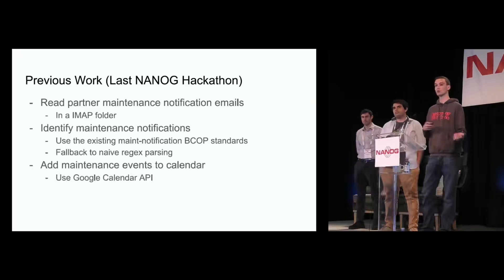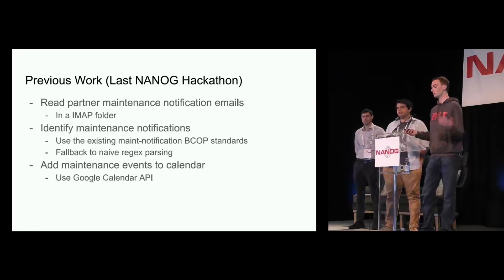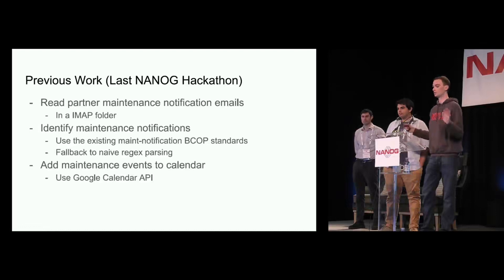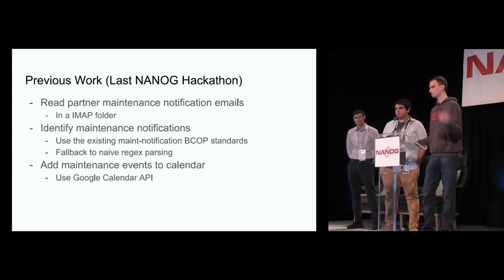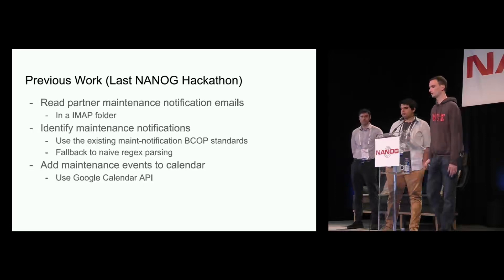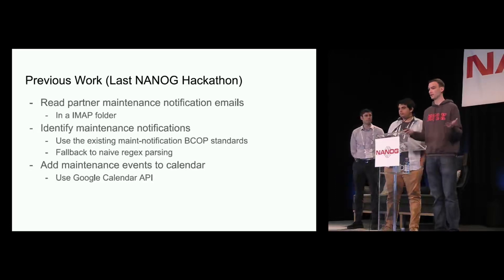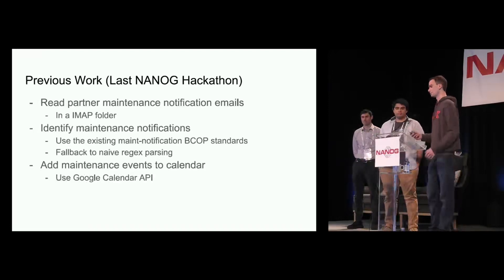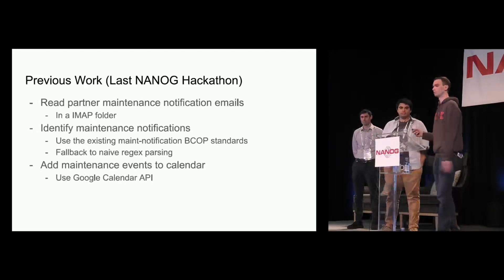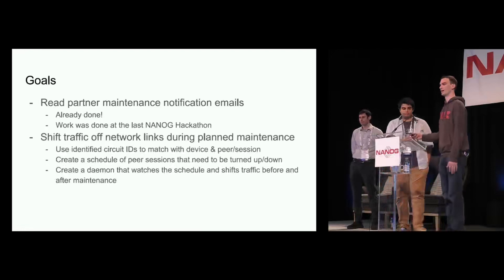There's an existing maintenance notification BCOP standard that has some headers in an ICS attachment that we can use to identify maintenance notifications. We looked for those first. If we couldn't find them, we fell back to some naive regex parsing — simple regex strings that pull out start time, end time, circuit ID, and some other small details about the maintenance event. Once we had all these events, we bundle them together, put them in a schedule as well as Google Calendar. Aaron will now talk about what we worked on during this hackathon.